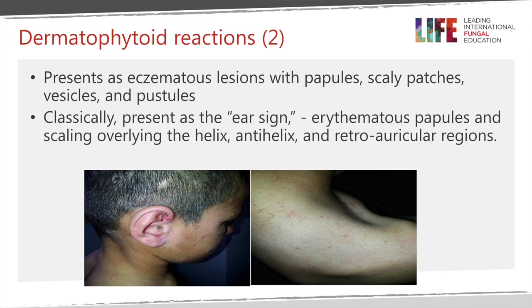The dermatophytoid reactions present as eczematous lesions — papules, scaly patches, vesicles, and pustules. Classically in Tinea Capitis specifically, you get an ear sign: erythematous papules and scaling overlying the helix, as seen in the photograph to the left of your screen. You can see tiny red papules and pustules over the helix, and sometimes also in the retroauricular regions. The photograph on the right shows small erythematous papules on the arm, distant from the scalp infection.